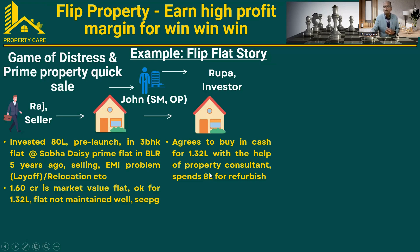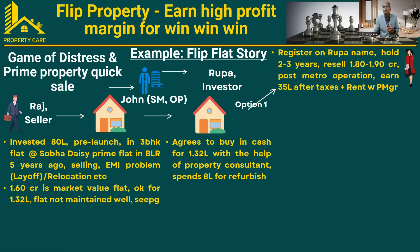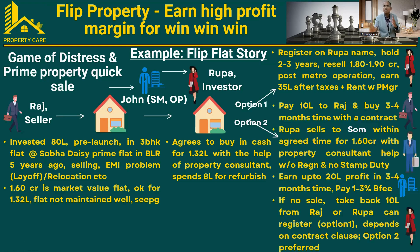Rupa now has two options. Option one: register the flat in her name and later sell it for 1.8 to 1.9 crore in two to three years' time. She can hold it because there is some metro planning going on in that area, which will increase the value. During that time, she can also rent out the property with the help of a property manager who collects the rent and credits it to her account — so she gets both appreciation and rent. However, the majority of flippers prefer the second option.